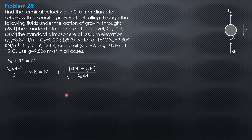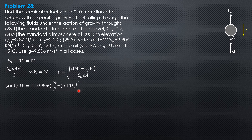This is the working equation. The weight is the specific weight of the sphere — 1.4 times 9,806 newtons per cubic meter for water — times the volume of the sphere, which is (4/3)πr³. So weight equals 1.4 times 9,806 times (4/3)π times 0.105 cubed, giving weight equals 66.57 newtons.